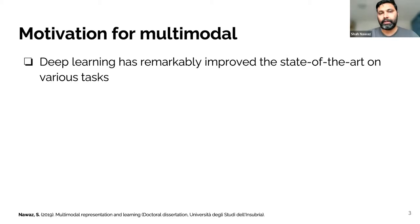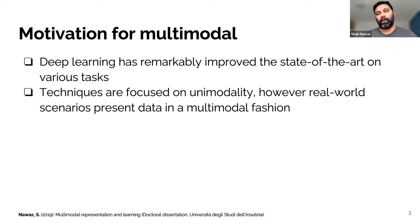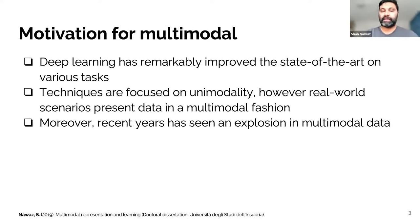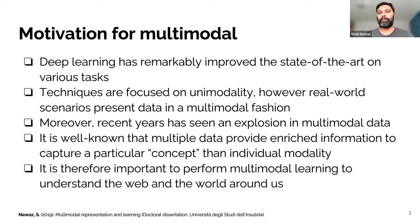Deep learning has remarkably improved state of the art on object detection, image recognition, and text processing. Interestingly, the majority of these techniques are focused on unimodal, while real world scenarios present data in a multimodal fashion. For example, we see objects, we listen to sound, we feel the odor. Moreover, recent years have seen an explosion in multimodal data over the internet. Users combine audio-visual information to share a tweet or sell a product on an e-commerce platform. Multiple data provide enriched information to capture a particular concept better than individual modality, making multimodal learning important to understand the web and the world around us.